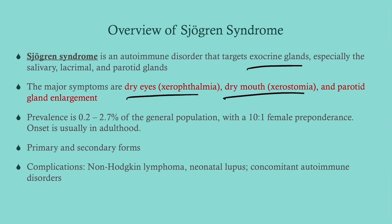The prevalence is around one to two percent, with a ten-to-one female predominance, so if you get a case on your exam it's going to be a woman. Onset is usually in adulthood — the 30s or 40s or so.